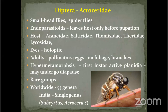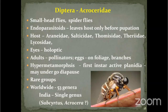In Diptera, Acroceridae — small-headed flies, also called spider flies — are exclusively parasitic on spiders, specifically juvenile and adult stages. What 'exclusively' means here is that all known species of Acroceridae described to date are known to be parasitic on spiders — the maggots of Acroceridae do not feed on any other host. They depend on spiders completely.